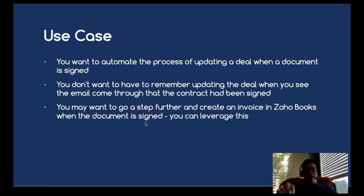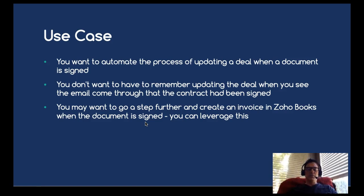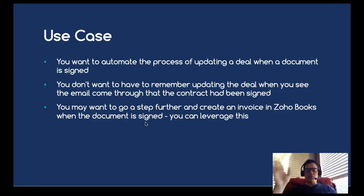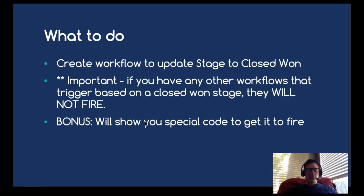You may even want to go a step further after doing this — and we've done another video on that — where from the signature happening on that contract or document you sent out, it can trigger Zoho Books to create an invoice with that dollar amount and send off the invoice automatically. That's not in scope here, but there's probably going to be a link somewhere on the page. What we're going to do is create a workflow to update the stage to Closed Won — super easy.